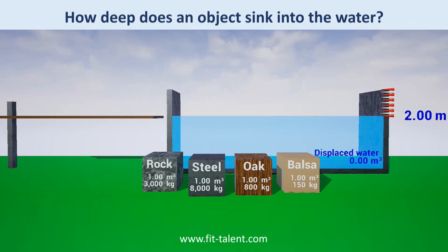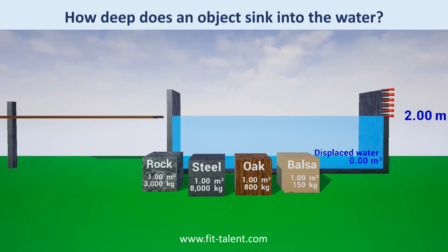In contrast, floating objects only displace a part of their volume. This part is exactly the same as what is under the water level, and this is exactly proportional to the object's density compared to water.